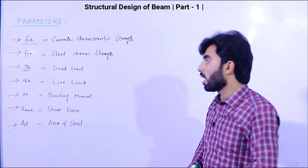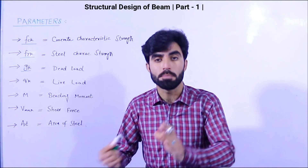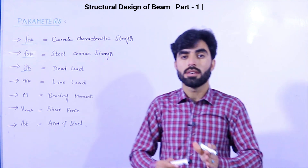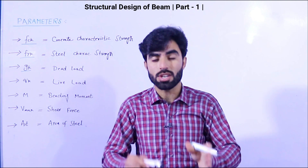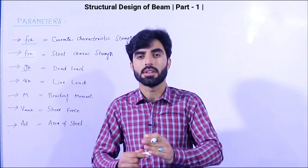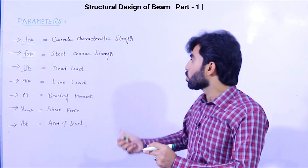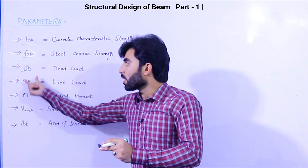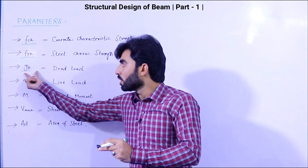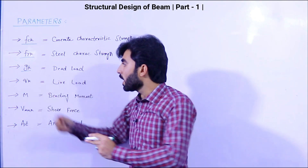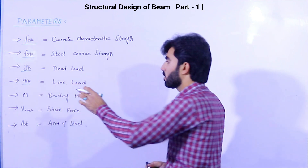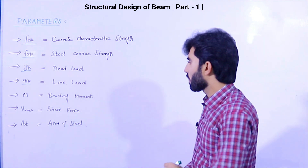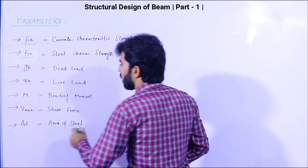The next parameter is gk, which represents dead load — the self-load of the beam. For structural design of a beam, you should have both dead load and live load. gk shows dead load and qk shows live load. From these, we can get the ultimate load used in the beam design.